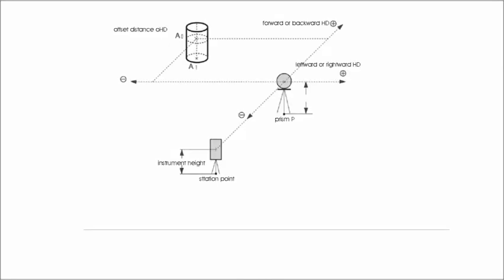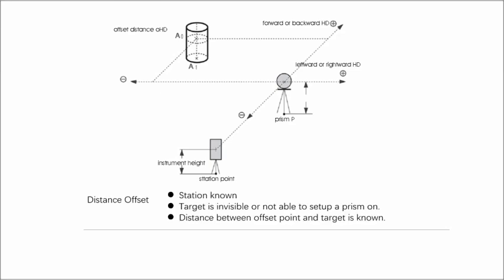When the target is invisible, set the prism at an offset point. Measure the offset point, then the total station will calculate the coordinate of the invisible target by the relationship between the offset point and the target.